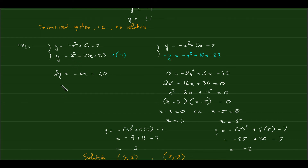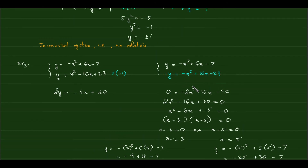Notice that to find y we still plugged back in — essentially using substitution at the end. The lesson is: when you eliminate a variable, make sure the result has only one variable left. You have to be flexible and choose the approach that fully eliminates one variable at a time.